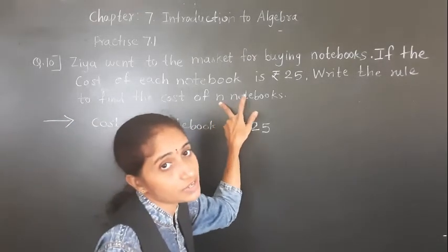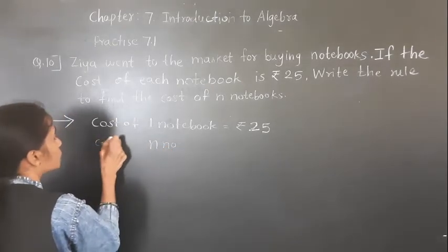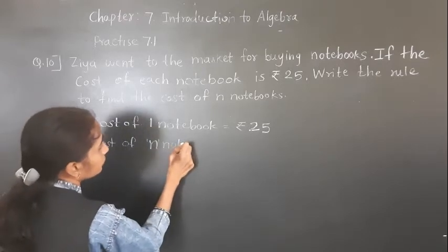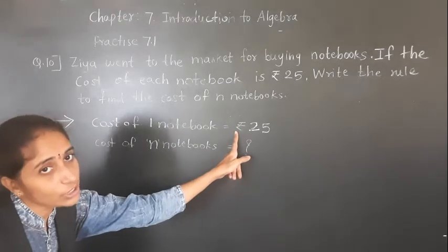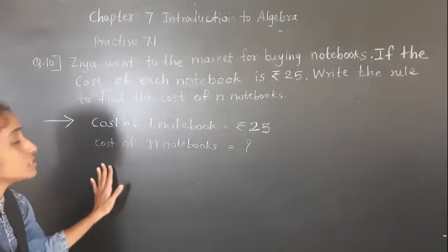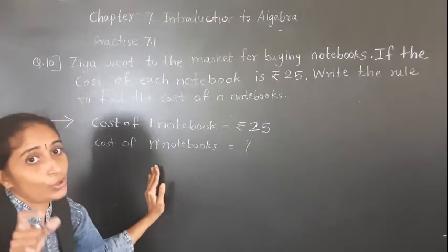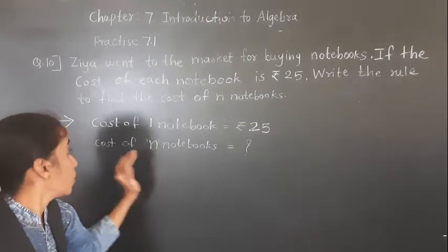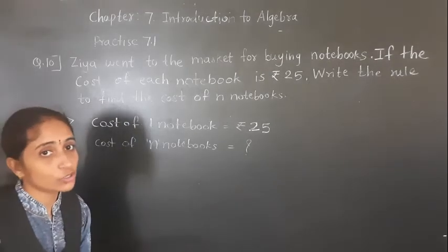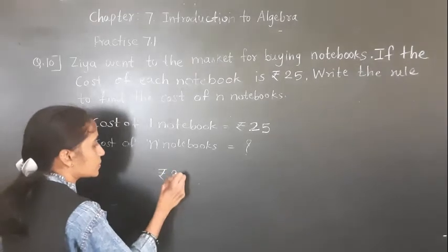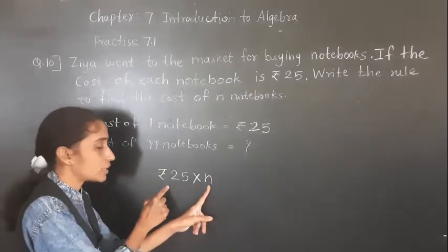N notebooks means the number of notebooks is N. We have to find the cost of N notebooks. Cost of one notebook is rupees 25. So for N notebooks, we need to multiply. We have to multiply rupees 25 by N to find the cost of N notebooks.